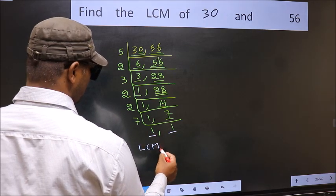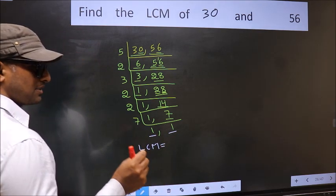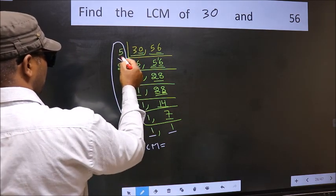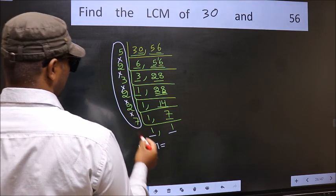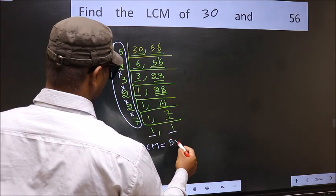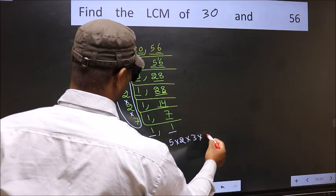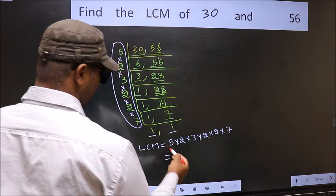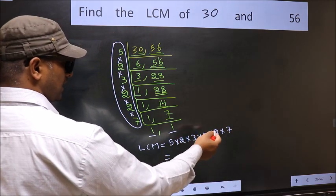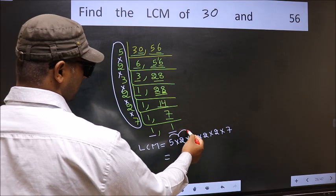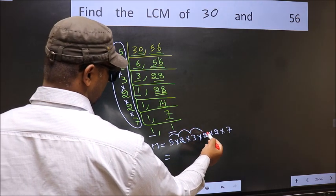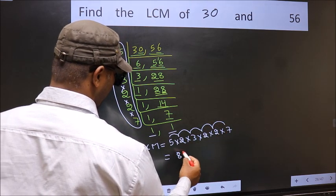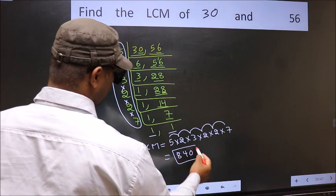So our LCM is, LCM is the product of these numbers, that is 5 into 2 into 3 into 2 into 2 into 7. So let us multiply these numbers. 5 into 2, 10 into 3, 30 into 2, 60 into 2, 120 into 7, 840. So 840 is our LCM.